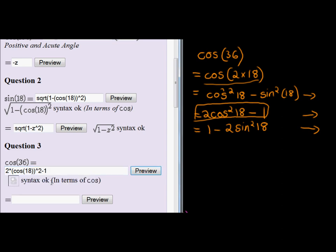Syntax is okay. Cool. And there we go. 2 cos of 18 squared minus 1.